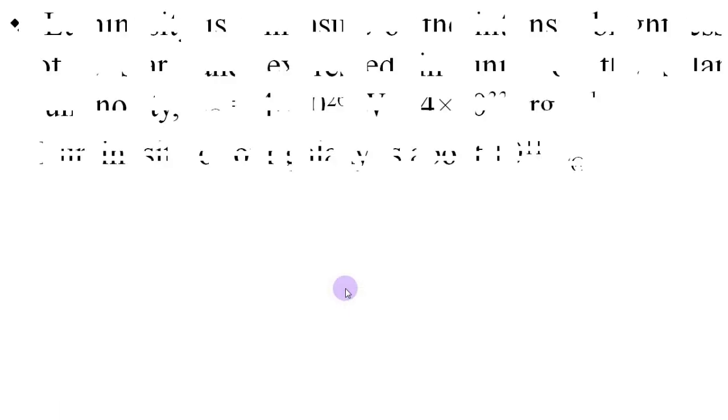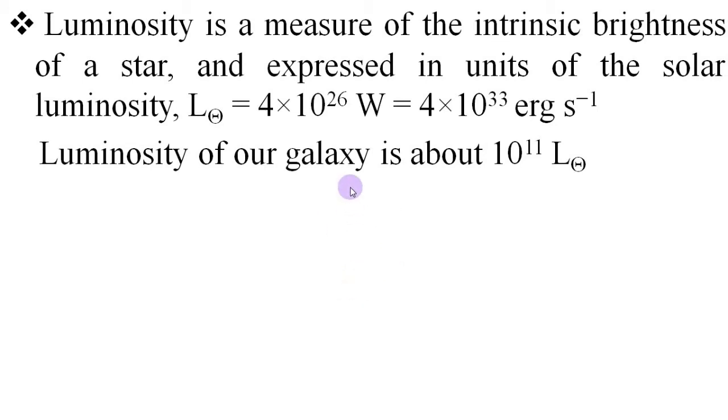The luminosity of a stellar object is a measure of the intrinsic brightness of the star. It is expressed generally in the units of solar luminosity L☉ which equals 4×10²⁶ watts or 4×10³³ erg per second. For example, the luminosity of our galaxy is about 10¹¹ L☉.